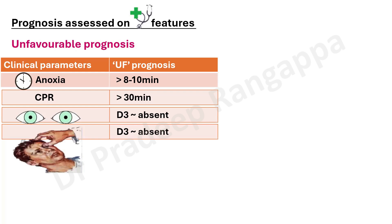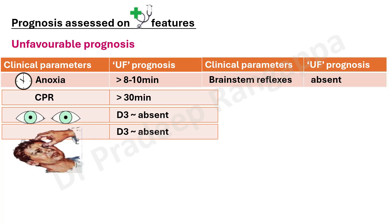Pay attention to motor response to painful stimuli at day 3. If it is absent, studies consistently show poor neurological outcome and mortality. You can deliver supraorbital pain, sternal pain, or pain to any bony prominence. If the response is absent or extensor at day 3, that is significant. Another important number to keep in mind: prognostication can be conclusively made at the end of 72 hours, as shown by multiple studies. Day 3 absent motor response is very important.